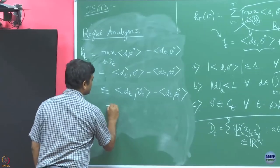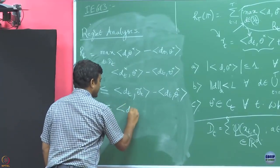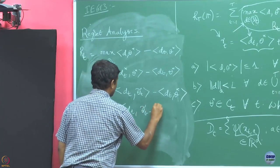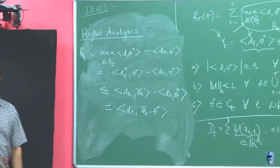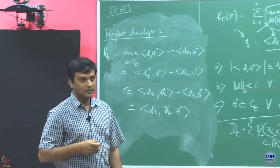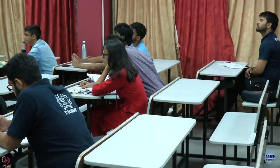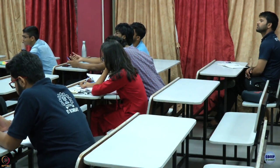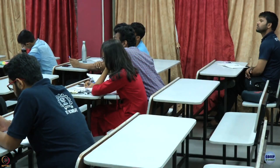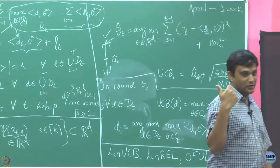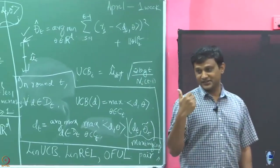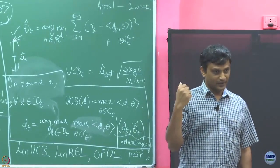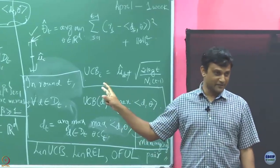This is nothing but d_t · (θ̃_t − θ*). I have assumed this with high probability — that is, I have assumed θ* belongs to C_t with high probability. We have to later show that it is indeed possible to construct such a set where θ* belongs to C_t with high probability.